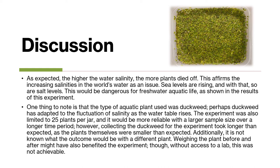The experiment was also limited to 25 plants per jar, and it would have been more reliable with a larger sample size over a longer period of time. However, collecting the duckweed took longer than expected, as the plants themselves were smaller than expected. Additionally, it is not known what the outcome would have been with a different plant. Weighing the plant before and after may have also benefited the experiment, though without access to a lab this wasn't achievable.